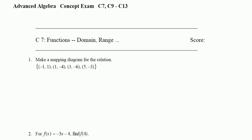This first problem asks us to make a mapping diagram. It's been a while since we saw this, but mapping diagrams were pretty simple. We basically just need to list all the numbers from the domain: negative one, one, three, and five.